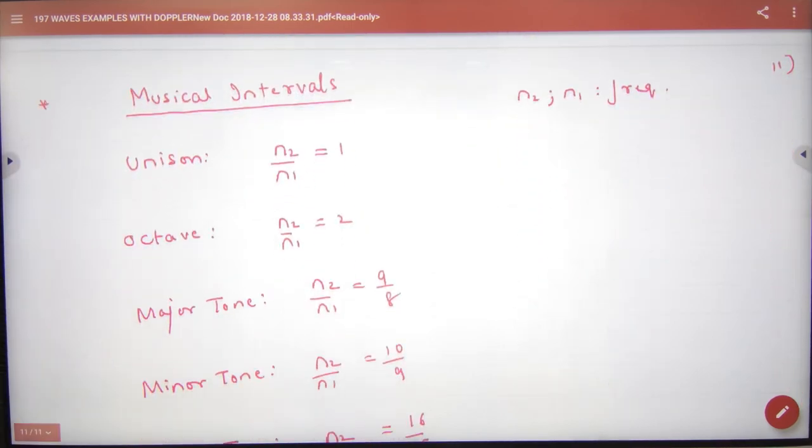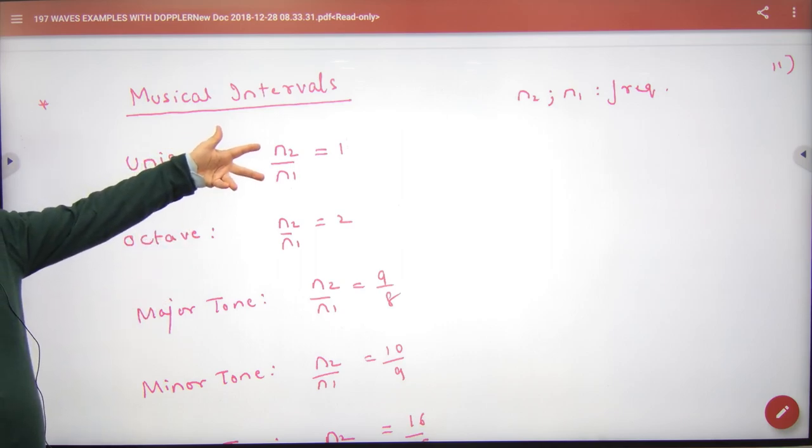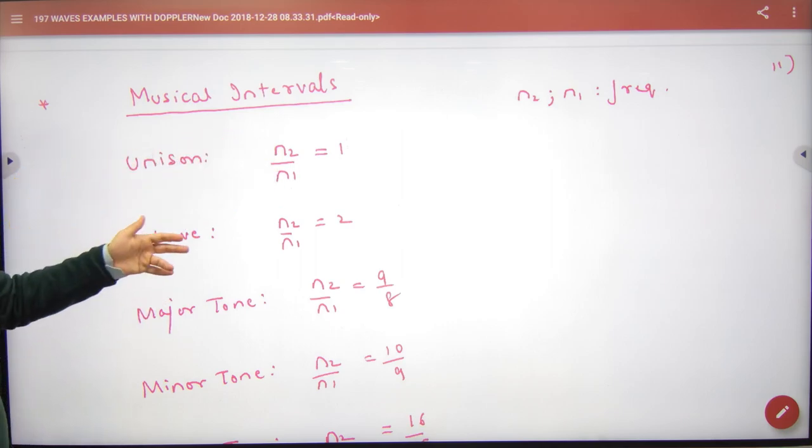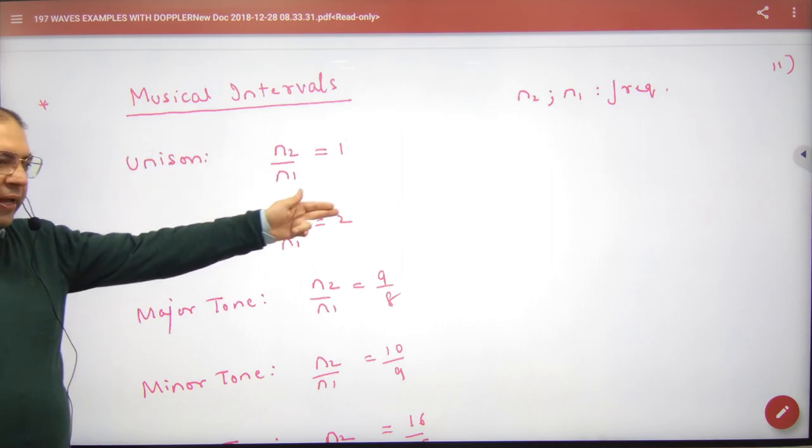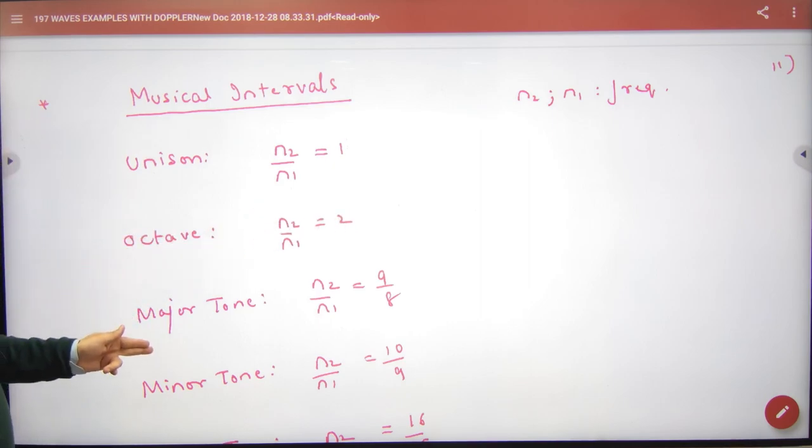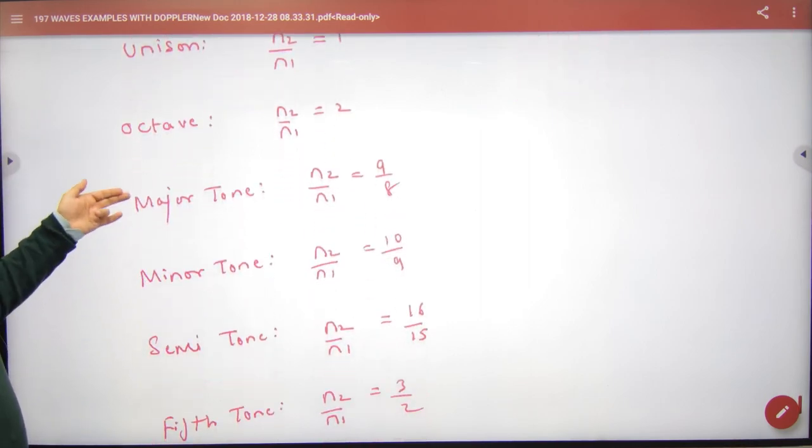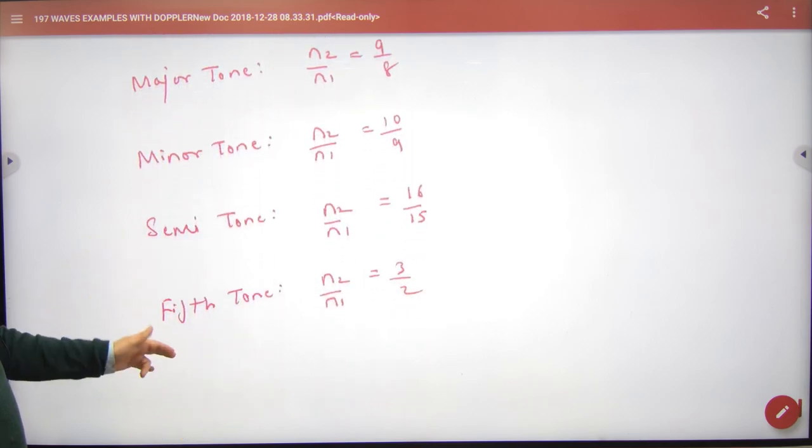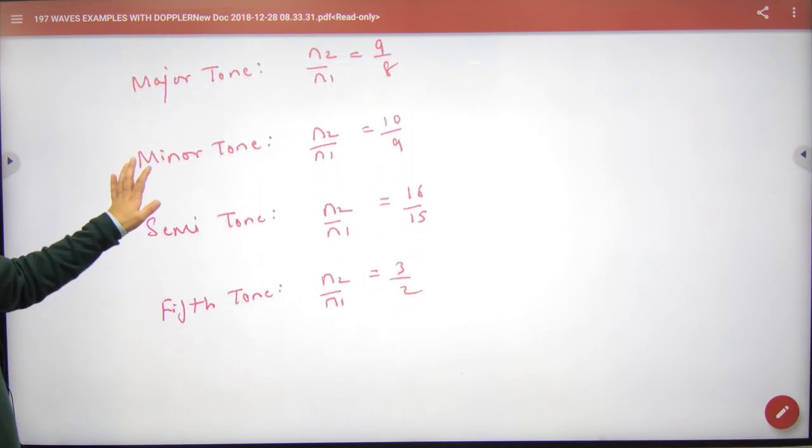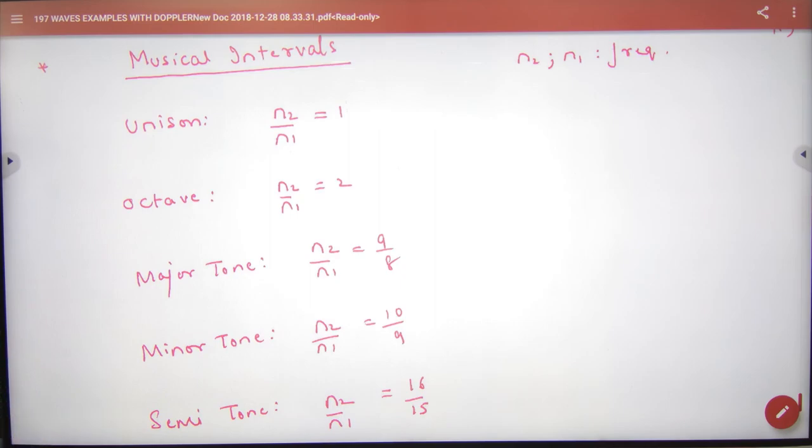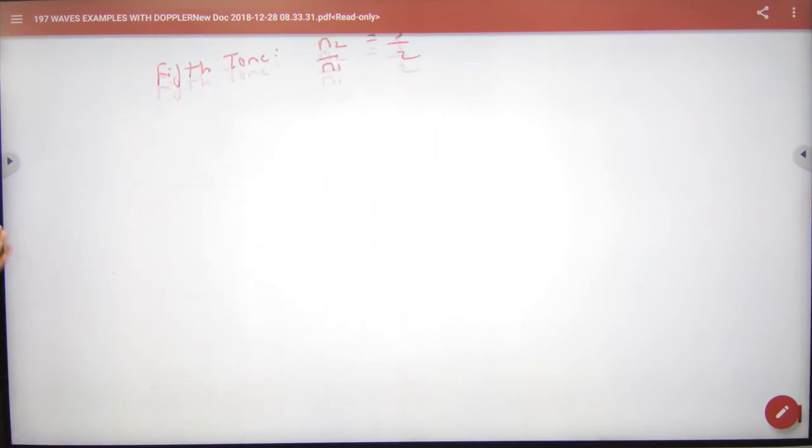In musical intervals, if there are two frequencies together, we call it unison. If the frequency is double, we call it octave. 9 by 8 is major tone, 10 by 9 is minor tone, 16 by 15, 3 by 2, these are tones. I remember only these. It is more than sufficient.